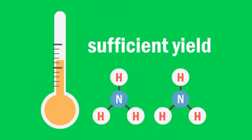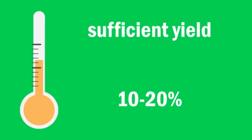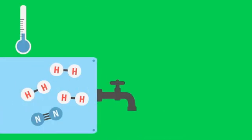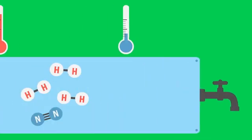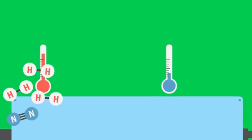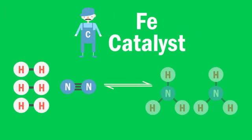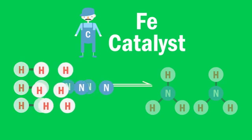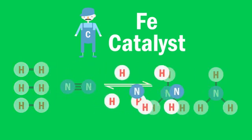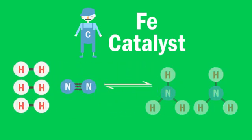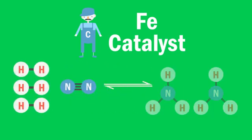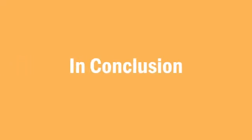The yield of this process is 10 to 20 percent. Remember from the introduction that unused gases are recycled, so no reactants are wasted. As well, an iron catalyst is used in this process. The presence of the catalyst does not affect the position of equilibrium, but increases the rate at which equilibrium is reached.